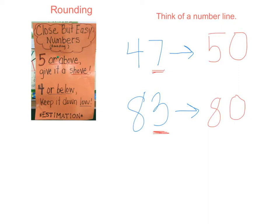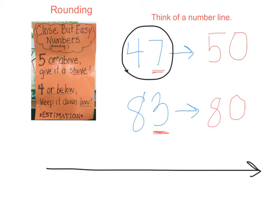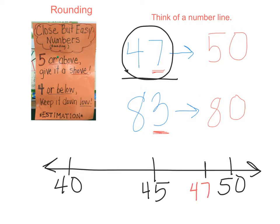Let's think of rounding in a different way. Let's think of it as a number line. If forty-seven, where one end is forty and the other is fifty, where does forty-seven fall on that number line? Well, we know forty-five is in the middle of that number line. Forty-seven would fall closer to the fifty. That is why we round forty-seven to fifty.